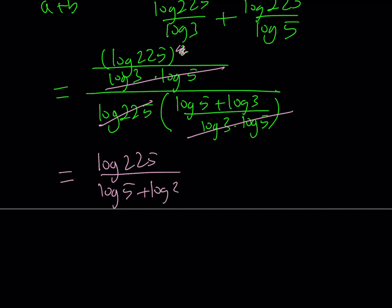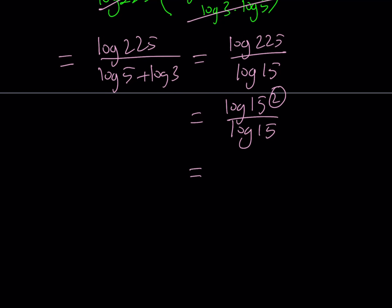And from the properties of logarithms, this can be written as log 3 times 5, the bottom expression, which is log 15. And 225 happens to be 15 squared, so I can write it as log 15 squared divided by log 15. And the 2 can be moved to the front. We can write this as 2 log 15 over log 15. They're all in base 10. You can cross them out, and the answer comes out as 2.